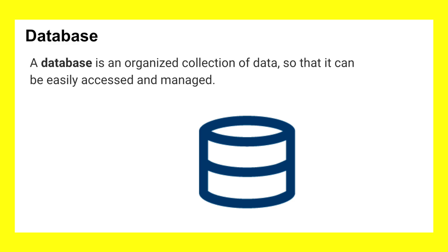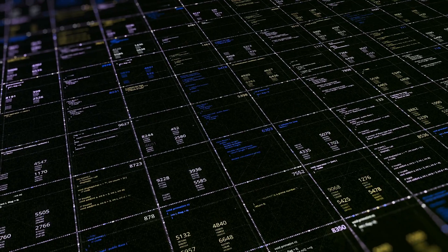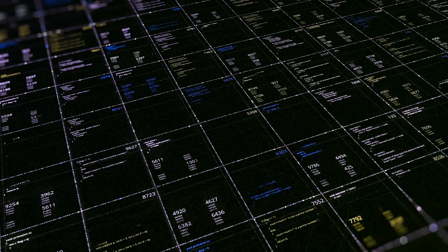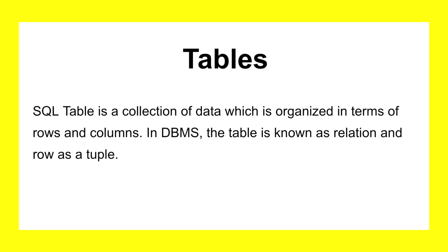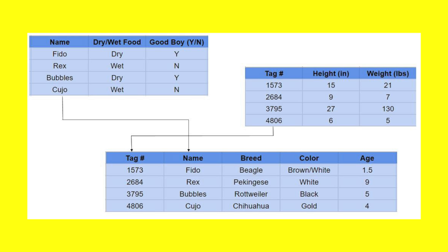Some databases might have different syntax or ways of writing queries, but you will get the same result at the end. Inside the database management system, we have databases — organized collections of data. In one company, there might be multiple databases for different teams such as accounting, IT department, marketing, sales, etc. And inside the database, you have tables, which is where your actual data gets stored. A SQL table is a collection of data organized in rows and columns — for example, four columns and five rows in this table.